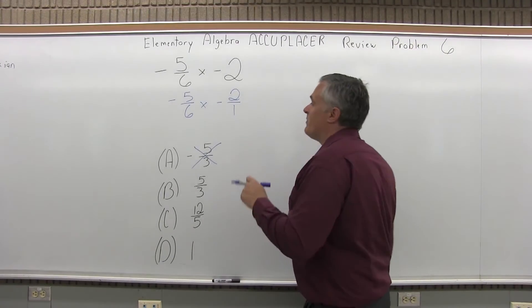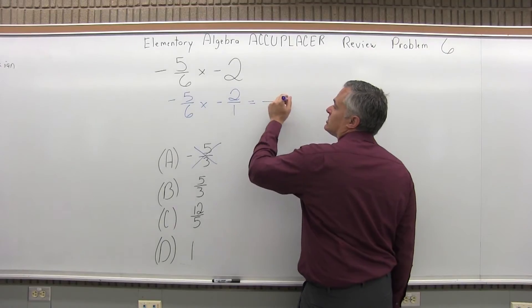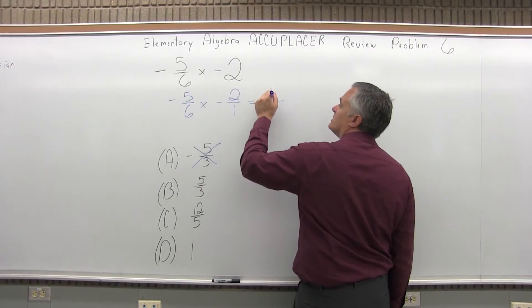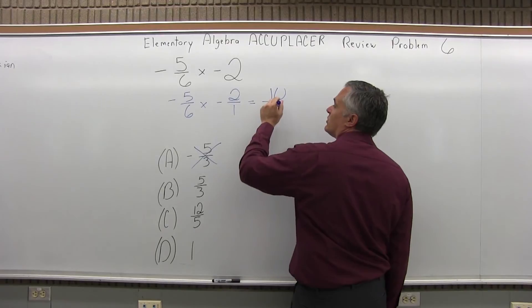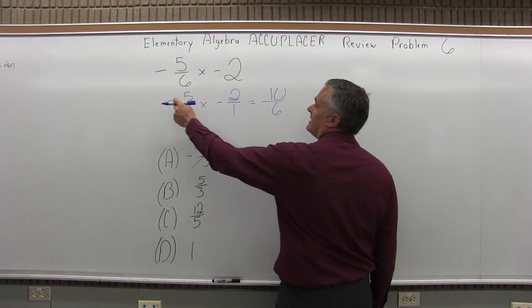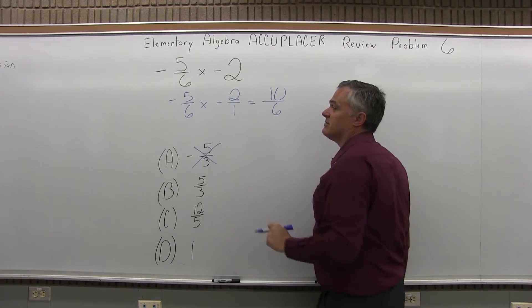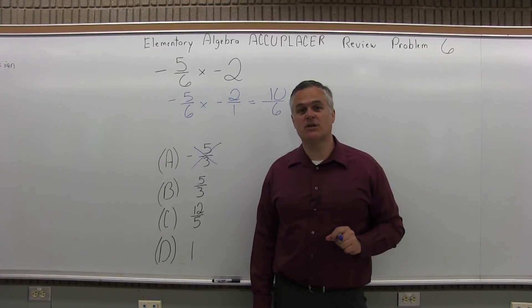So now I can multiply top times top, 5 times 2 is 10, bottom times bottom, 6 times 1 is 6. And the negative times the negative will cancel and be positive. So my answer is positive 10 over 6.